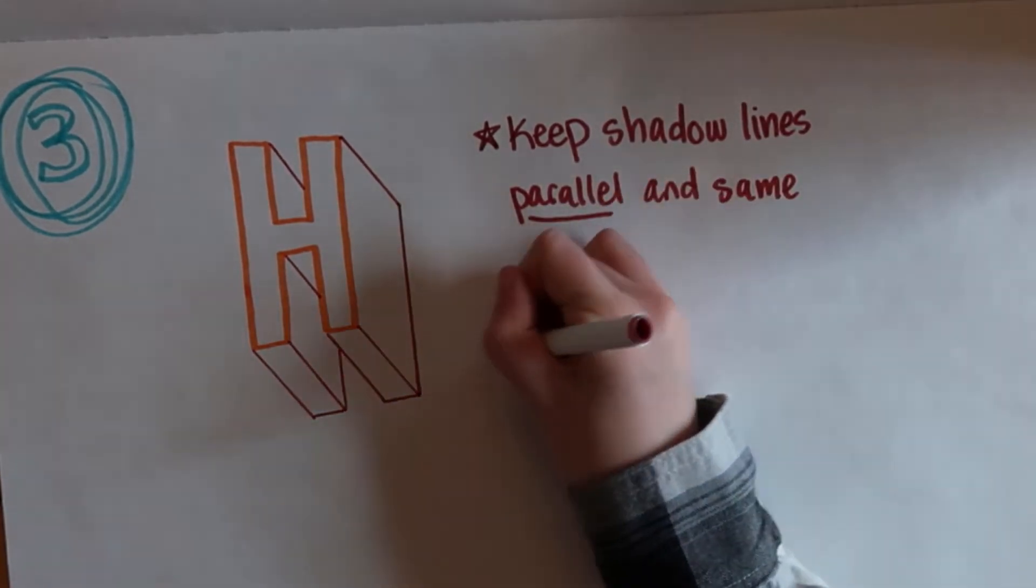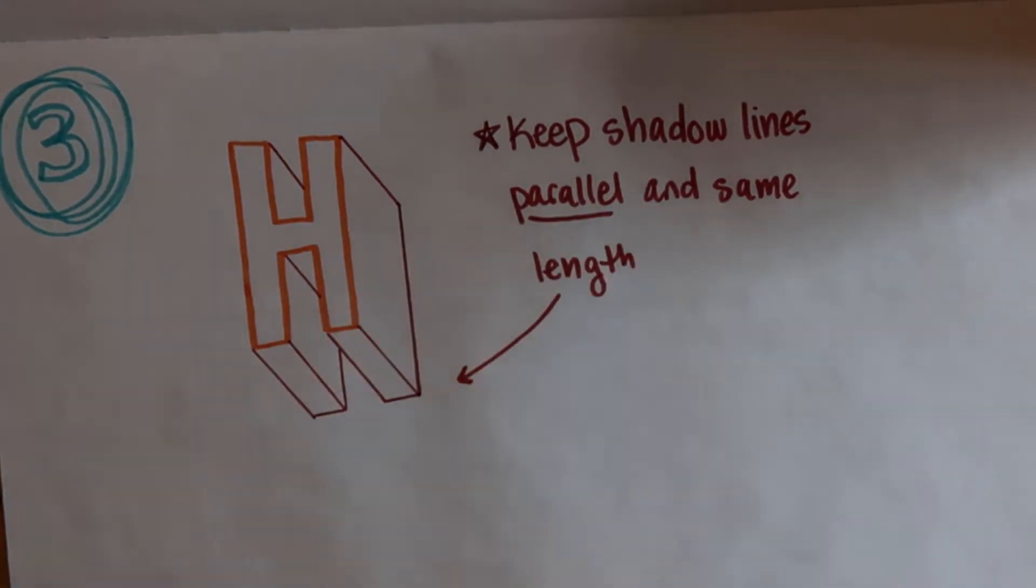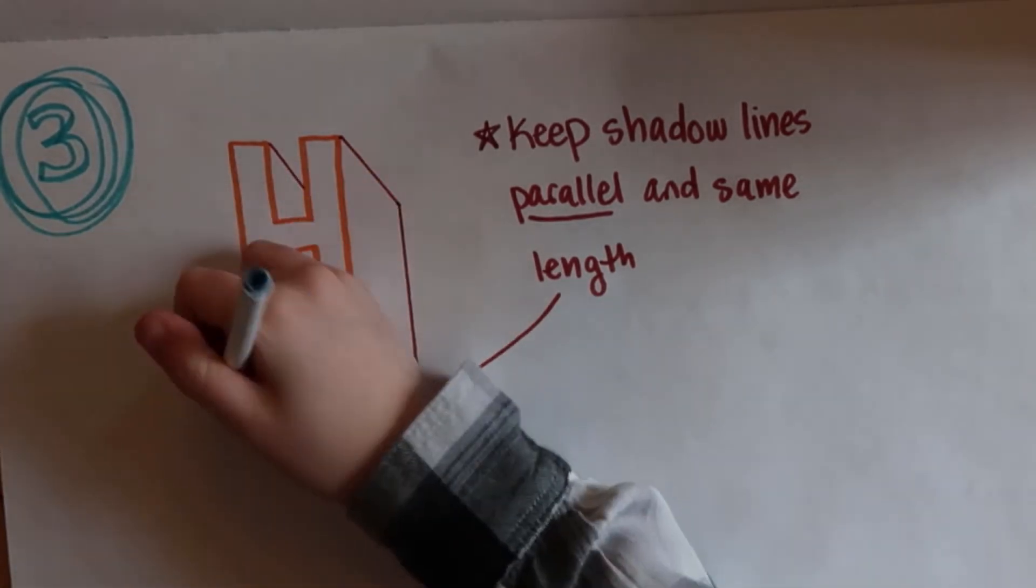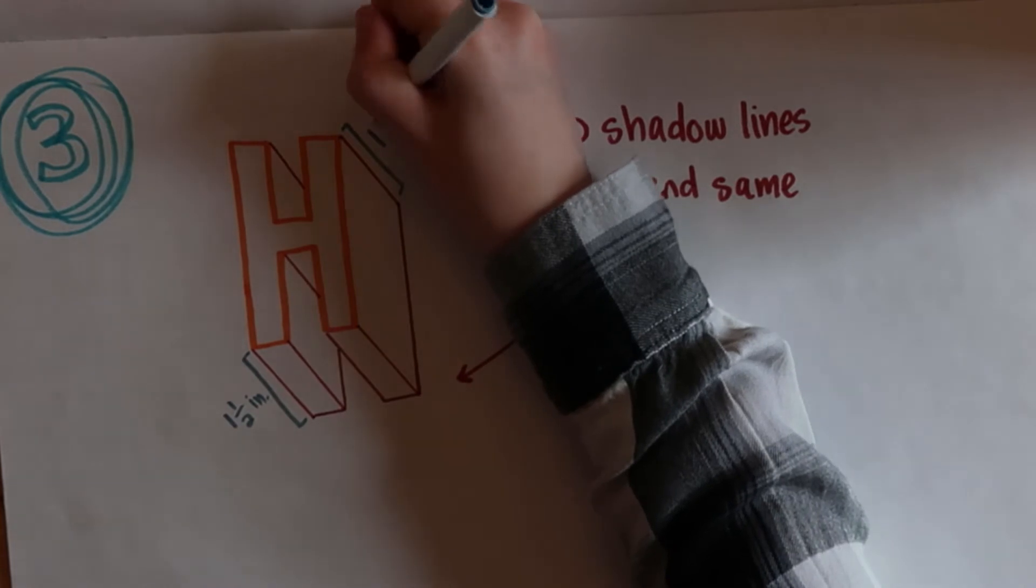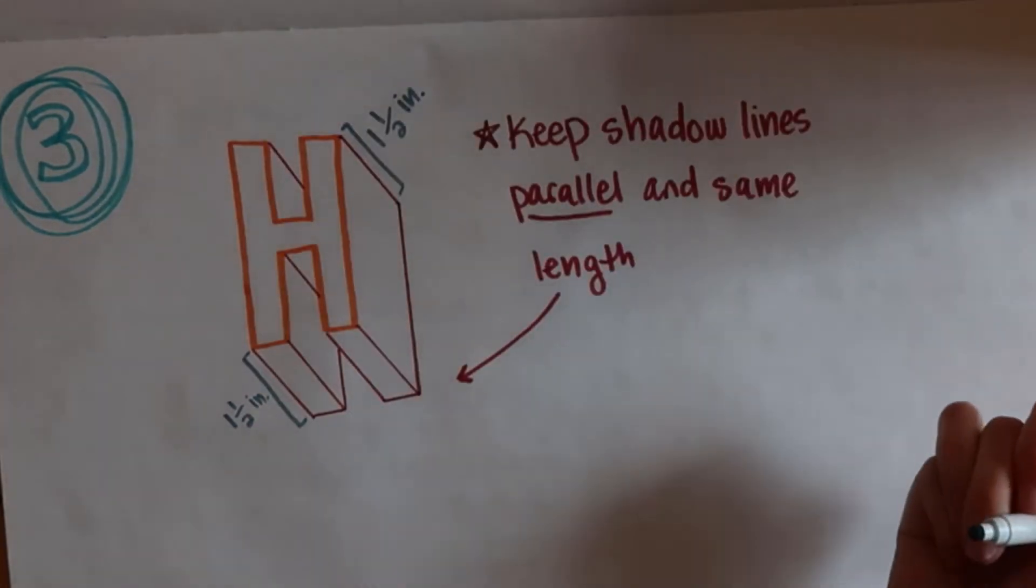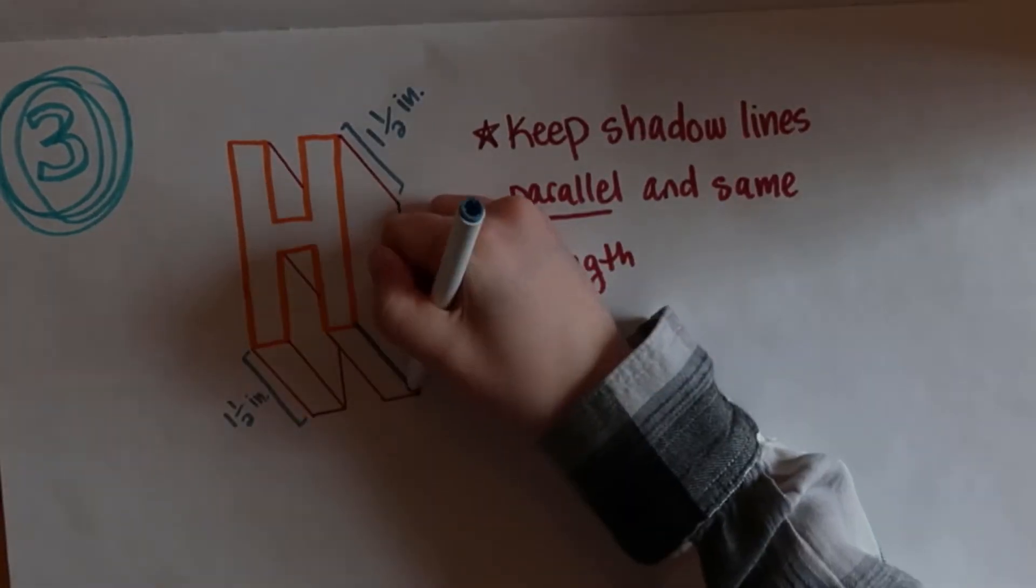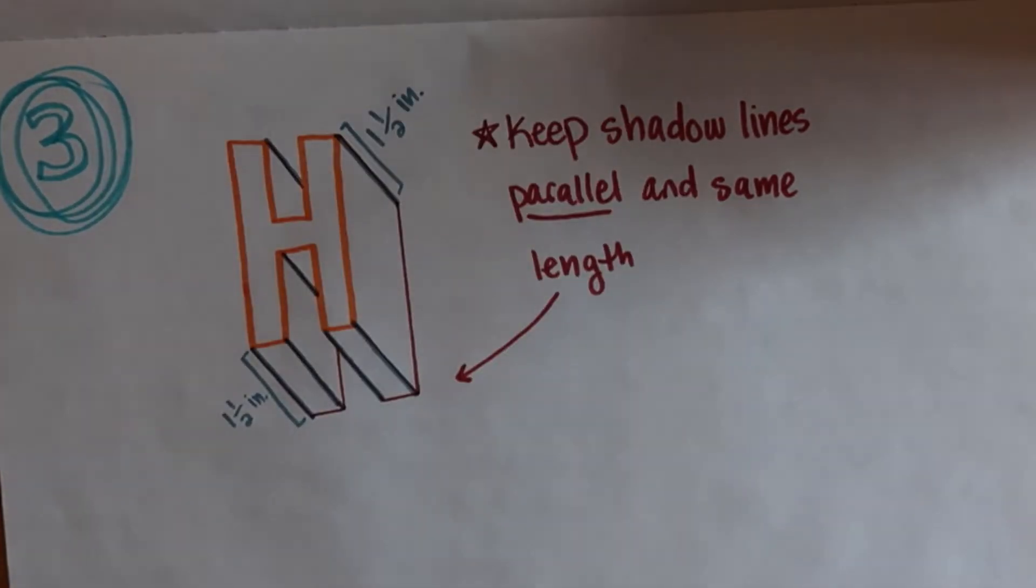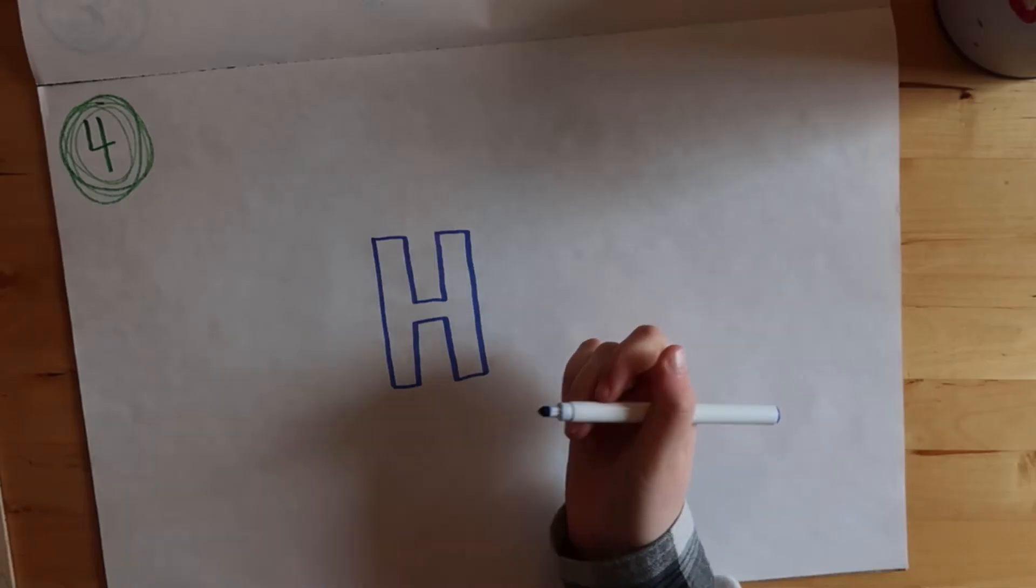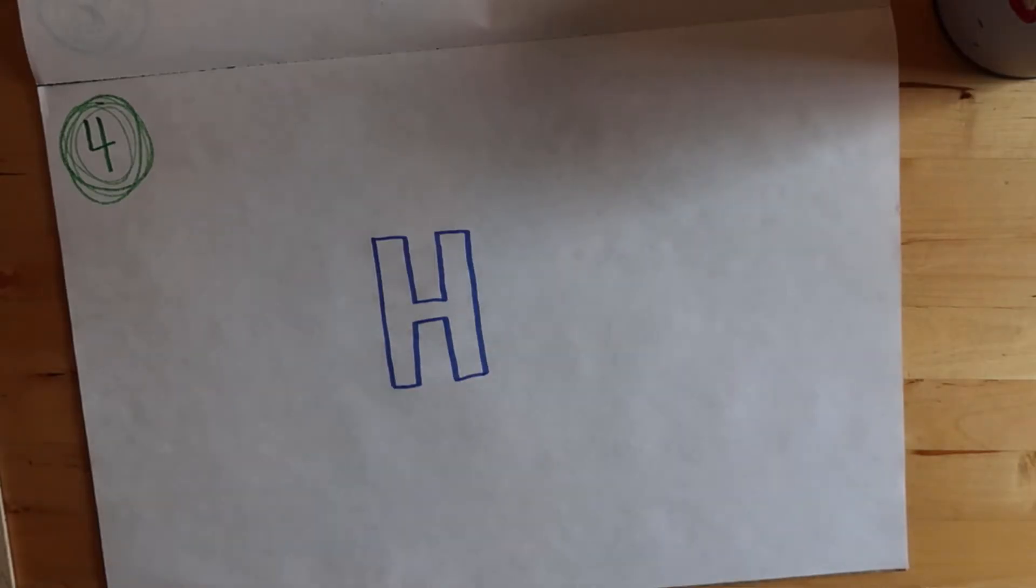And whenever you are drawing the shadow lines—and I'm just calling them shadow lines because I don't know what they're actually called—but whenever you're drawing the shadow lines, you want to keep those all the same length so that it just all looks better and all the lines can be parallel and stay together.